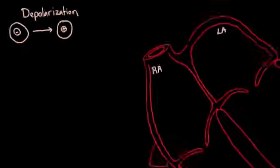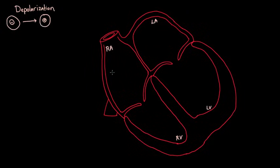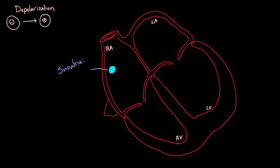So where does that begin? Let's draw it into our diagram. There's actually an area here where little cells can actually depolarize by themselves. That's quite unique because most cells in the body depolarize when the neighboring cell depolarizes. These are really unique cells because they're depolarizing all by themselves. We call that area the sinoatrial node, sometimes called the SA node. The fact that they can depolarize by themselves — we have a word for that too: automaticity. It just means they can automatically depolarize without having a neighbor do it first.